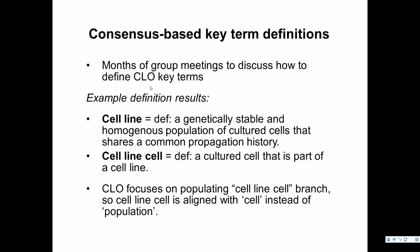We struggled for a long time because different groups had different opinions about how to define terms. What is a cell line? Some say it is a lineage, others say it is a culture, and others say it is a population. After several months of discussion, we agreed that a cell line is a genetically stable and homogeneous population of cultured cells that share a common propagation history. Once we agreed on this, ontology development became much easier, as we focus on top-level design — specifically on the cell line cell rather than on the population.